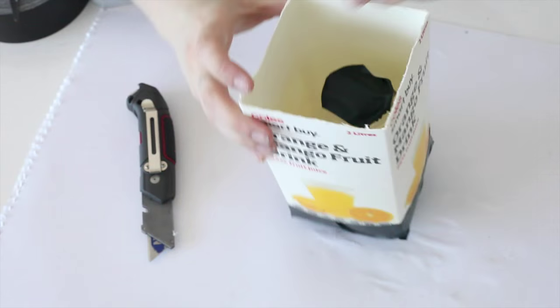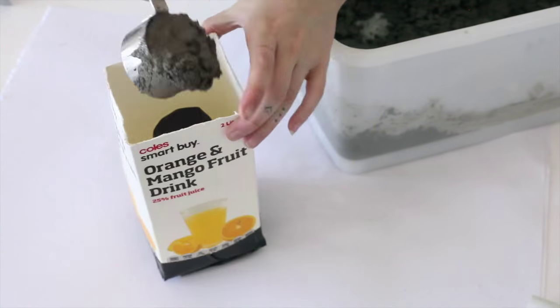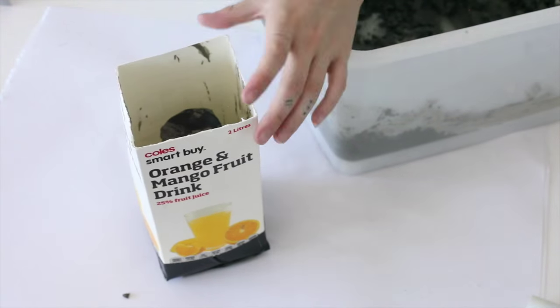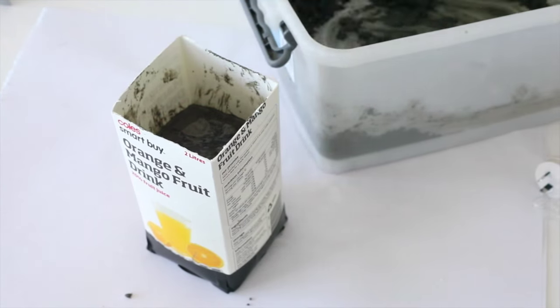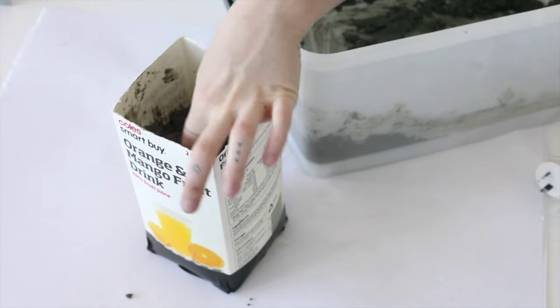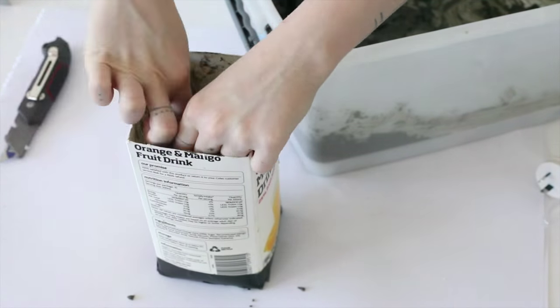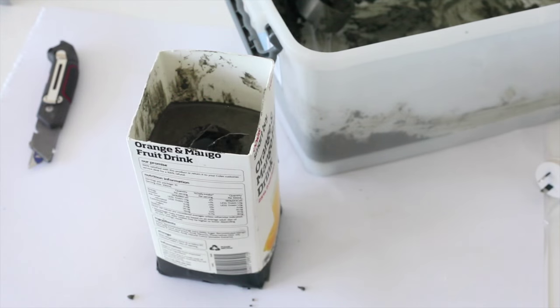Now just start pouring in your concrete. You want to go up to almost as high as the small bottle. Don't cover it, leave just a little bit of room at the top where the small bottle finishes. Then cut the tape down the middle where the small bottle is, then leave it for three days.